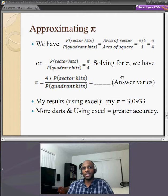In other words, the probability of the sector hits equals the probability of the quadrant hits, which equals pi over 4.